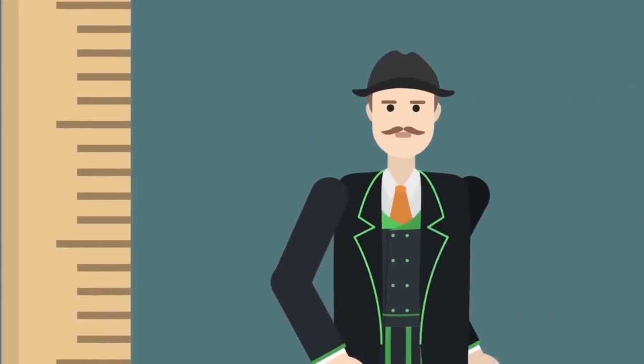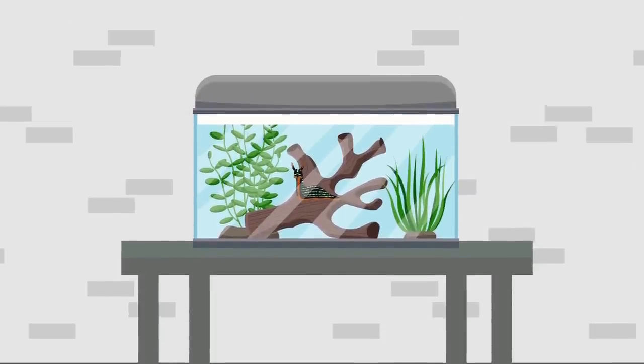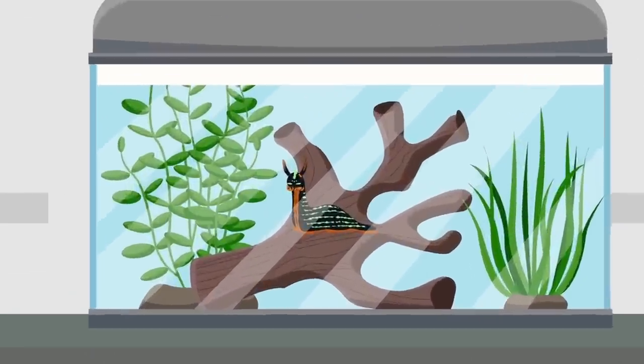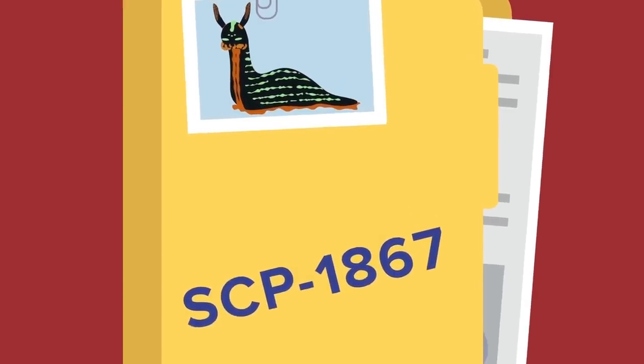This is because Lord Theodore Thomas Blackwood is a four and a half inch telepathic neon sea slug, and he's known to the SCP Foundation as SCP-1867.